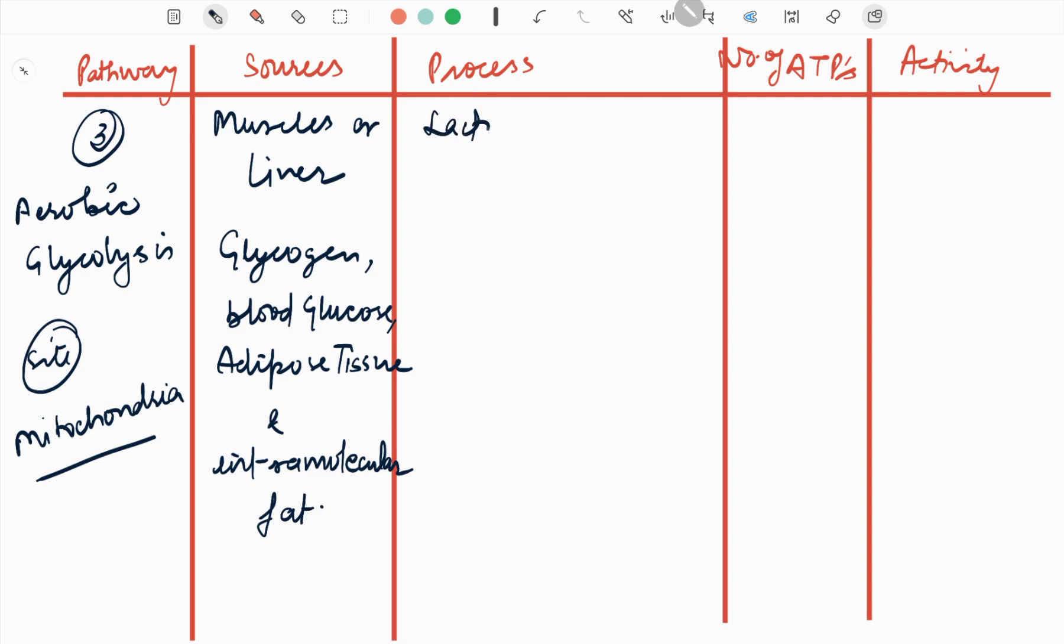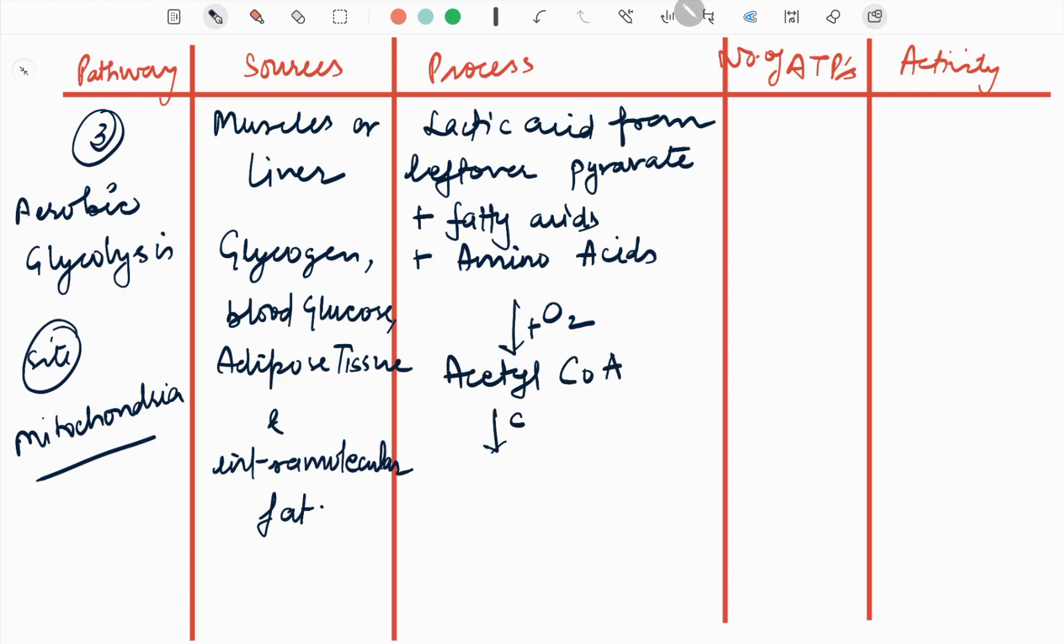The process is like this: lactic acid from leftover pyruvate plus fatty acids plus amino acids in presence of oxygen gives acetyl coenzyme A. This acetyl coenzyme A enters into Krebs cycle, forms ATP - two moles of ATP plus hydrogen ions plus CO2. And these H+ ions further enter into electron transfer chain and then produce 32 ATP.